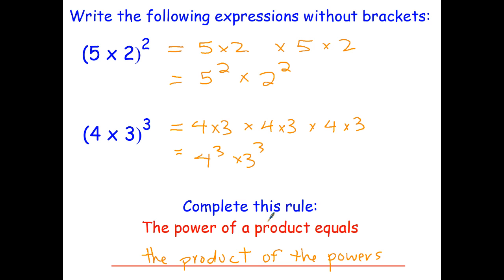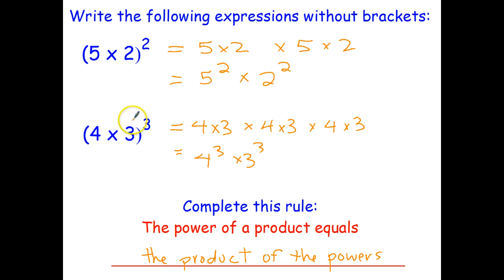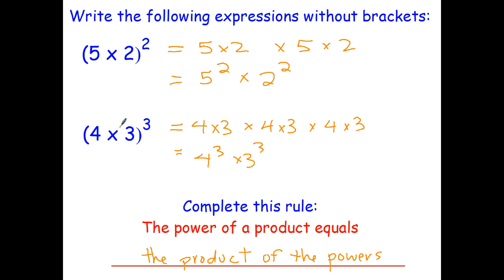You can basically get rid of any brackets if you've got a product raised to a power, just by saying that's five to the power of two times two to the power of two, or four to the power of three times three to the power of three. You can also work backwards — you could have an expression like four to the power of three times three to the power of three, and write it with brackets by doing this process in reverse order. So it's useful for going in both directions.